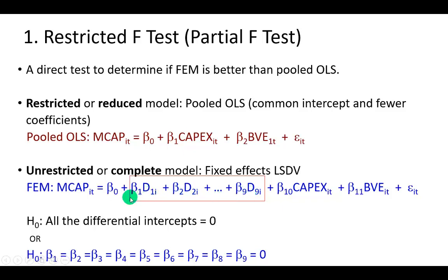But the differential intercepts are going to be the ones that I put here in the box, because these are the intercepts that tell us by how much each firm is different from the rest. As a result, the null hypothesis will be trying to verify whether these differential intercepts amount to zero.